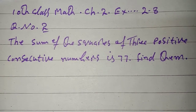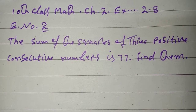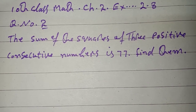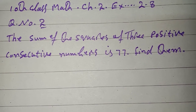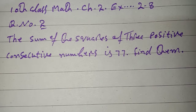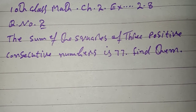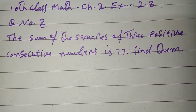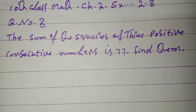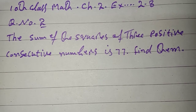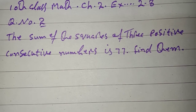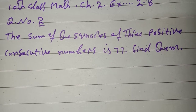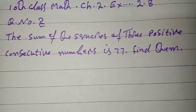Bismillah ar-Rahman ar-Rahim. Assalamu alaikum dear students. 10th Class Math Chapter No. 2, Exercise 2.8, Question No. 2. The sum of the squares of 3 positive consecutive numbers is 77. Find them.